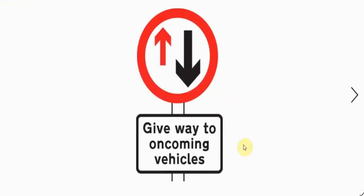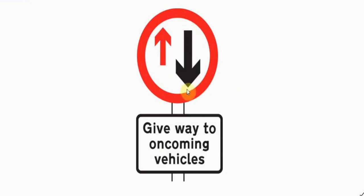This sign, accompanied by a plate, says 'give way to oncoming vehicles.' There's a red arrow indicating the direction we'd be travelling, saying give way to vehicles coming from the opposite side. At the other end of this narrow section there'll be a sign with a bigger arrow in the opposite direction - it's the bigger arrow that has priority. The plate emphasizes that oncoming vehicles have priority.